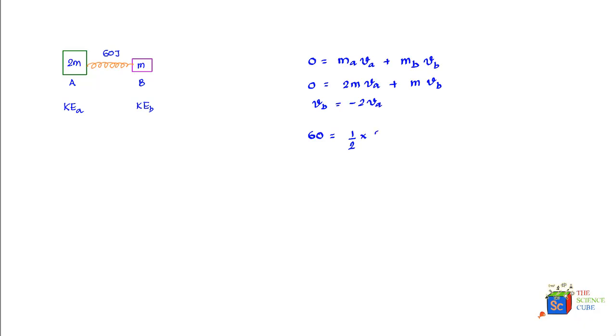Plus the kinetic energy of mass B, which would be half into m into vb^2. If we put vb equals minus 2va, what you get is 60 equals m*va^2, plus half into m into 4va^2, because 2va would become 4va^2 when you substitute. Therefore m*va^2 equals 20.